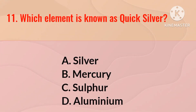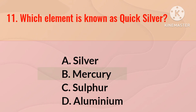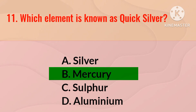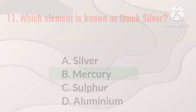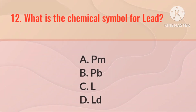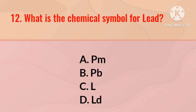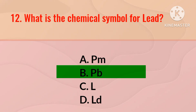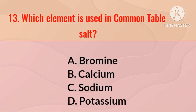Which element is known as quicksilver? The right answer is mercury. What is the chemical symbol for lead? The right answer is Pb.